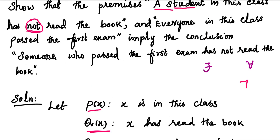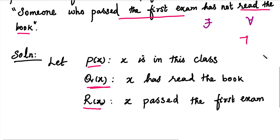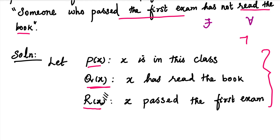The conclusion is: someone who passed the first exam has not read the book. This contains two different sentences, but we already have names for them. So in this question we have just three different predicates.